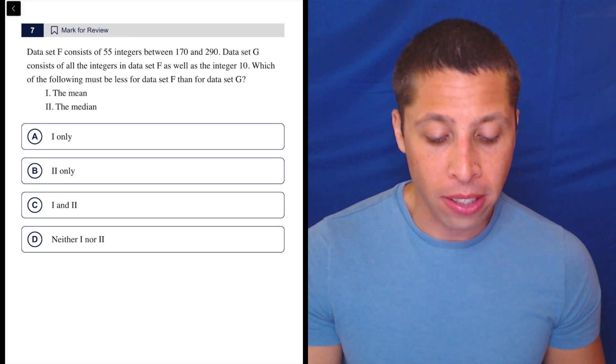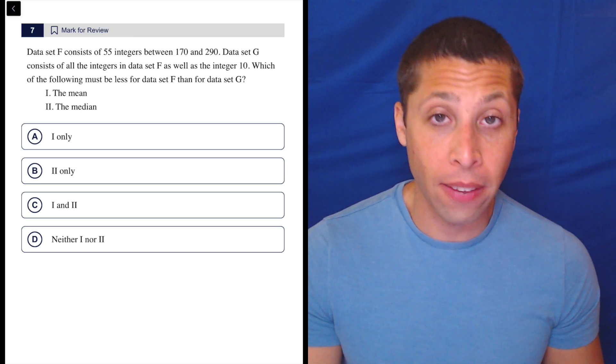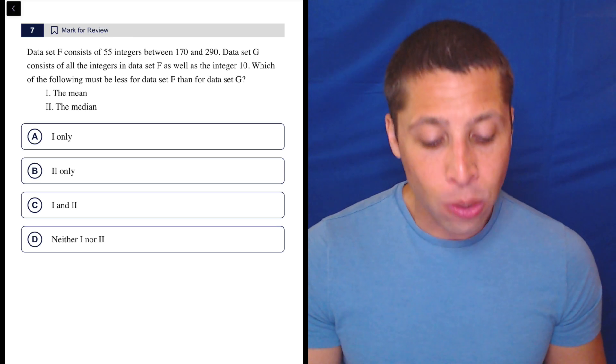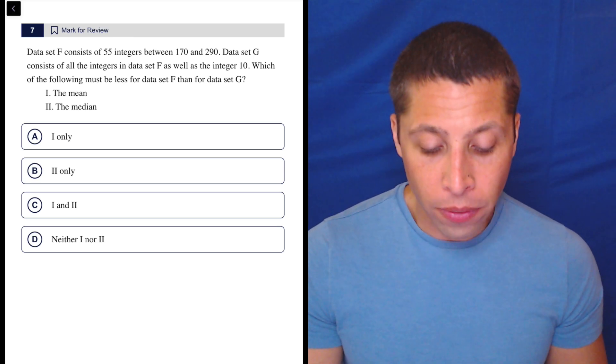So the data set F consists of 55 integers between 170 and 290. Data set G consists of all the integers in data set F as well as the integer 10. Which of the following must be less for data set F than for data set G?